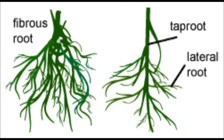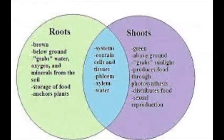For example, corns have the fibrous root system. In the tap root system, a primary root grows and becomes the largest root, from which smaller secondary roots will grow. In the fibrous root system, the primary root only grows for a short time, while the secondary roots grow as a cluster at the base of the stem.